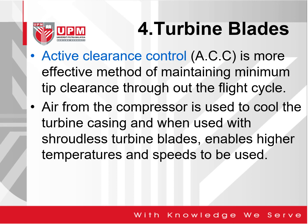Active Clearance Control, ACC, is a more effective method of maintaining minimum tip clearance. We don't want the tip clearance to be too large — just enough to allow the blade to move. Air from the compressor is used to cool the turbine casing. The turbine casing also needs to be cooled down when used with shroudless turbine blades. A stream of air from the compressor is used to cool down the turbine casing, which enables higher temperatures and speeds to be used in the cycle.